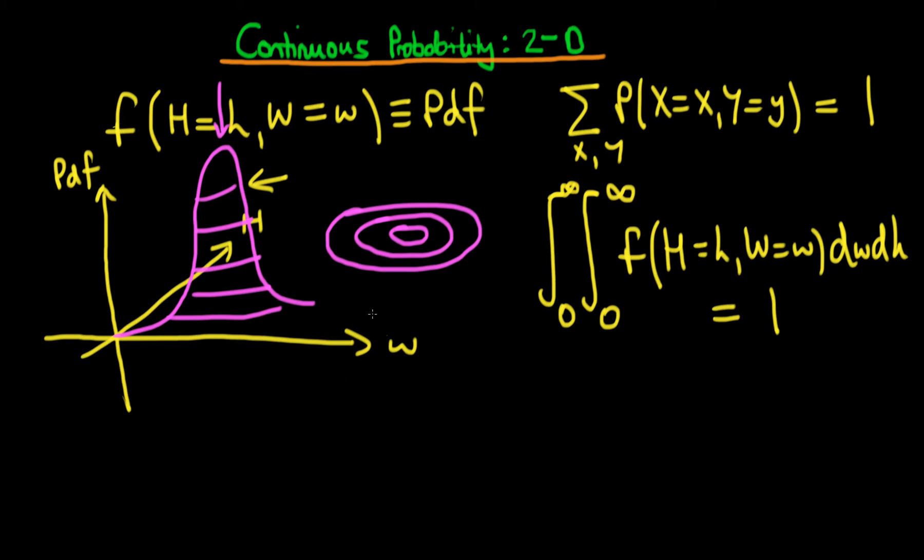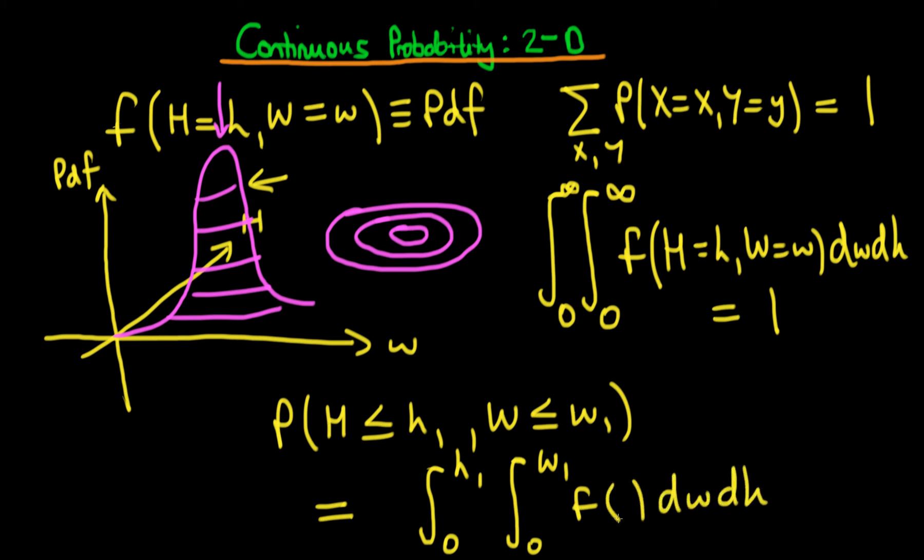Okay, so how do we then go ahead and use this knowledge that a volume represents a probability to help us work out the probability, say, that an individual's height is less than or equal to some certain value, and an individual's weight is less than or equal to some certain value? Well, it's quite simple, really. All we need to do is we just need to do an integral over all the values of height which are allowed. So we integrate from 0 to the height, H1, and then we integrate from 0 to the weight, W1, and we integrate our function, F, across both weight and height. And I've neglected to put the arguments in here just because of space.